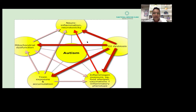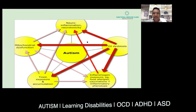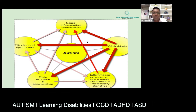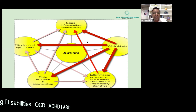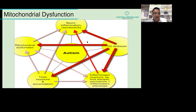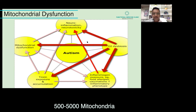That inflammation in turn causes neuroinflammation — inflammation in the brain — which has consequences: these symptoms of learning disabilities, autism, OCD, ADHD, and related conditions.